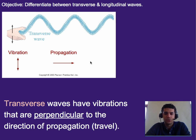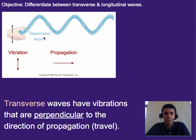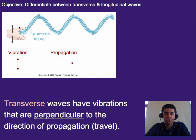In transverse waves, the direction of vibration is different. Instead of being parallel to the direction of propagation, it's going to be perpendicular to the direction of propagation. So if our wave is traveling to the right, then in order to make a transverse wave, the vibration must be up and down — at a right angle to the direction of propagation.